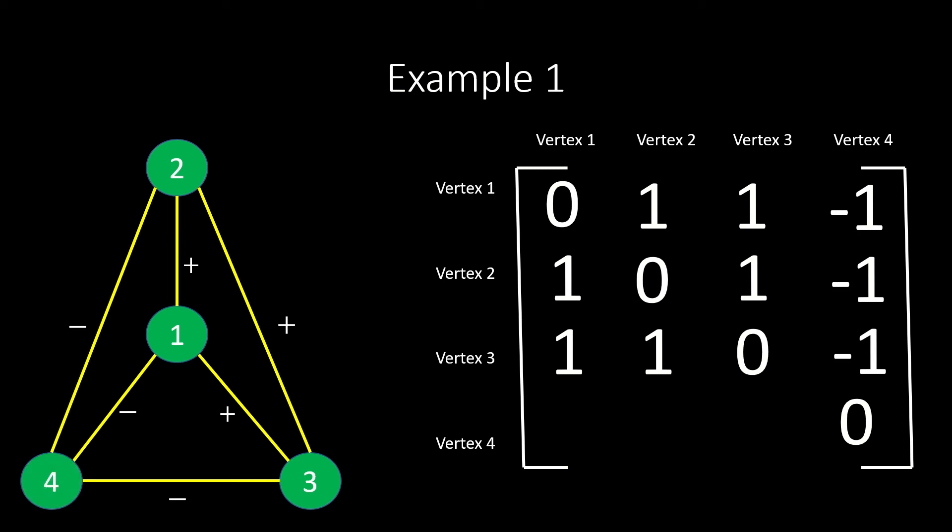Finally, vertex 4 is adjacent to vertices 1, 2, and 3 with negative edges, so entries 4, 1, 4, 2, and 4, 3 are all negative 1. This is our adjacency matrix.